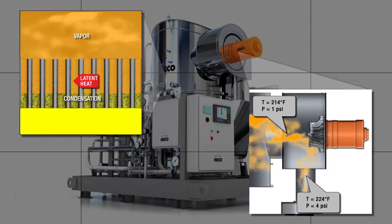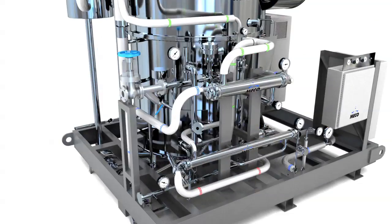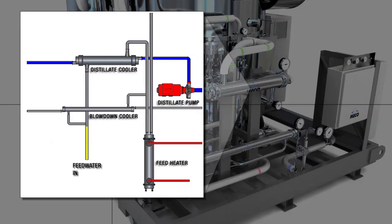Conservation of latent heat is the reason for the MECO vapor compression still's high energy efficiency. The process begins when feed water is preheated by the distillate cooler and blow-down cooler as well as the feed heater.